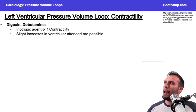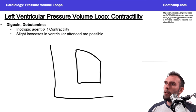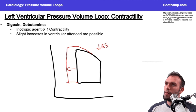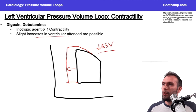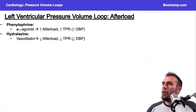For contractility: if I give an agent that increases contractility, the major change is a decrease in end-systolic volume — more blood is ejected from the heart. There might be a slight increase in afterload because of the increased pressure generated by that contractility, but the key thing to remember is the decrease in end-systolic volume.